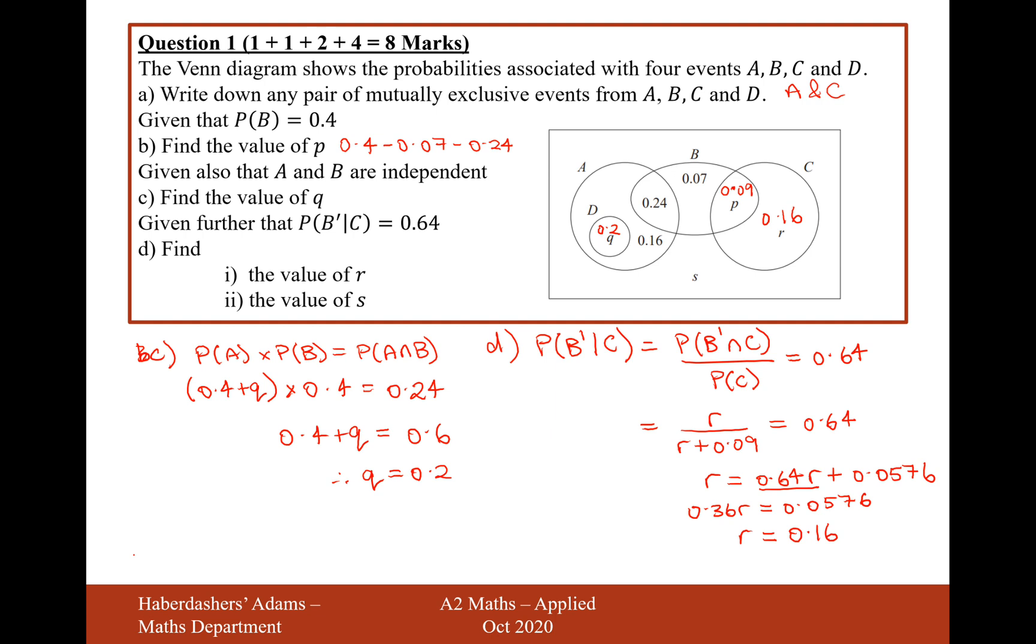And then the final answer to work out what S is equal to. It's going to be 1 minus everything that's on this Venn diagram already. So 1 minus 0.2 and 0.16 and 0.24 and 0.07 and 0.09 and 0.16.